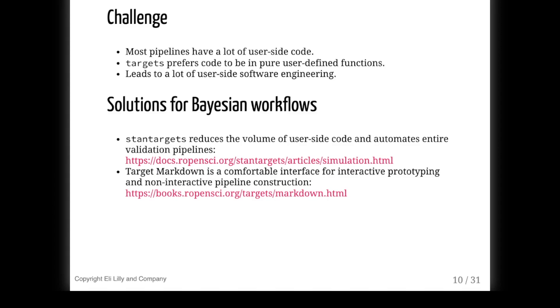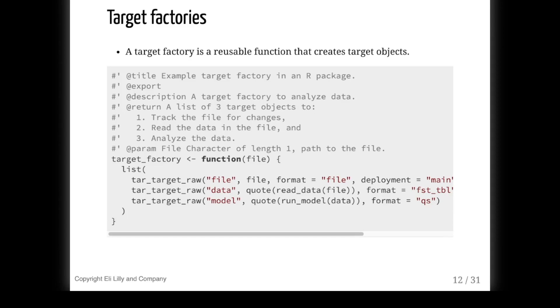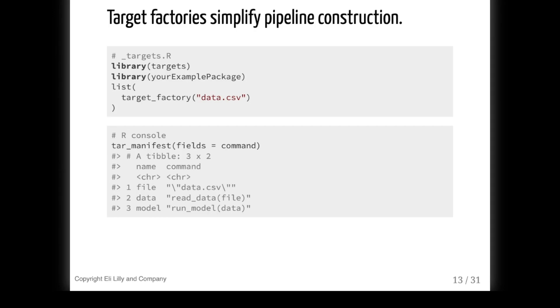The first breakthrough is the R targetopia, an emerging collection of packages like stan targets that produce ready-made pipelines for specialized situations. These packages already have functions and targets built in, so the user does not have to write nearly as much code or think as hard about engineering the pipeline at a low level. The mechanism behind these packages is a domain-specific pattern called the target factory. A target factory is a function, usually in a package, that produces one or more target objects. A target object is just the definition of a target represented in a special instance of an S3 class. For the user, target factories really simplify pipeline construction.